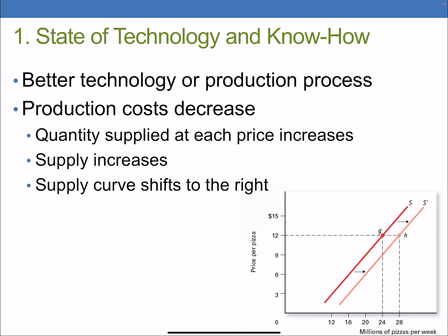State of technology, or our know-how: if we have a new technology or an improvement to the production process, this is going to help us produce more. What we see when we have new technology is that production costs decrease. Anything that makes production costs decrease will make supply increase, or shift to the right — shown here going from supply curve S to supply curve S prime. Previously at a price of $12 a pizza we were only willing and able to supply 24 million a week, but new technology makes it cheaper to produce, so we move from point G to point H on the new supply curve, now willing and able to supply 28 million pizzas a week.